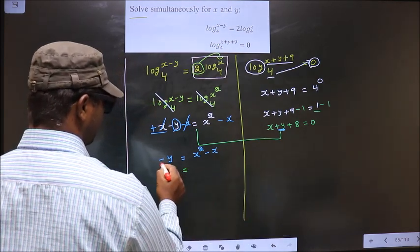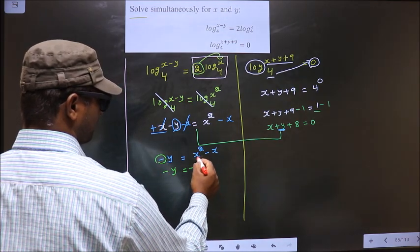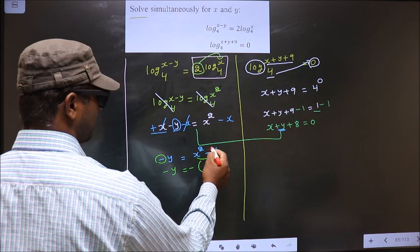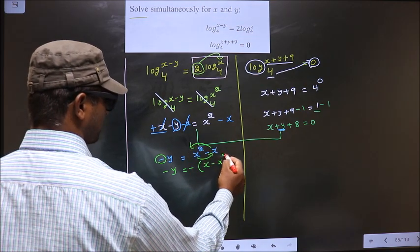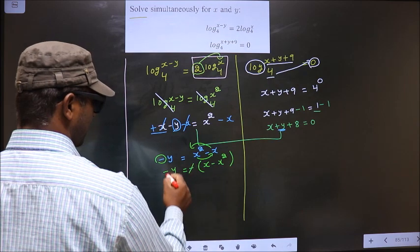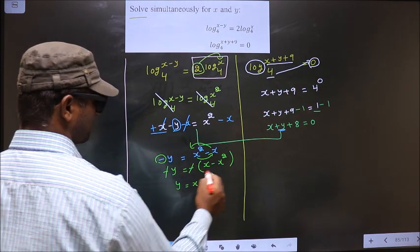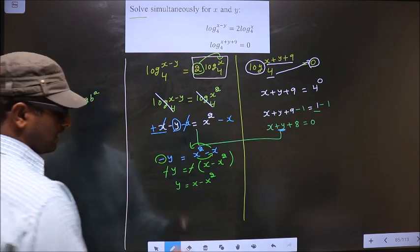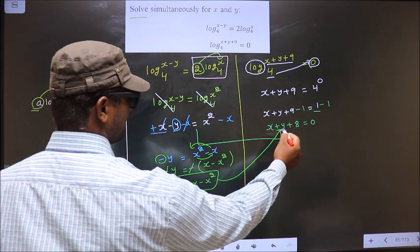This gives -y = x² - x. To cancel the negative sign, factor out negative from the right side. The terms interchange: y = x - x².